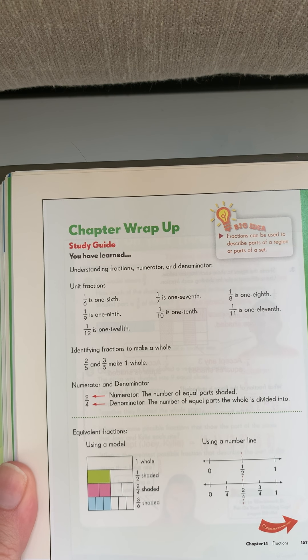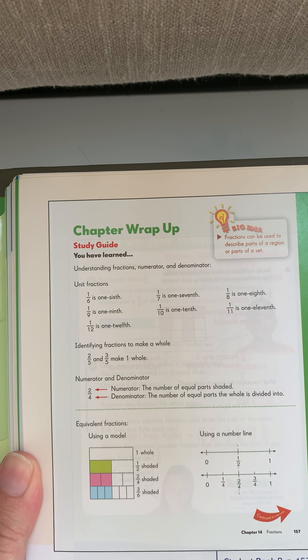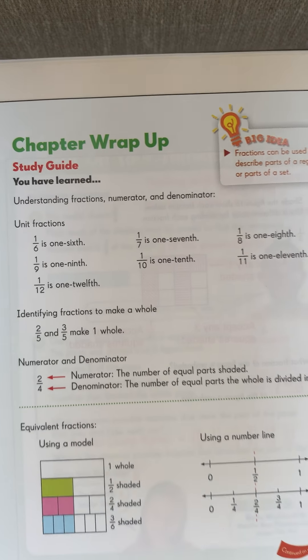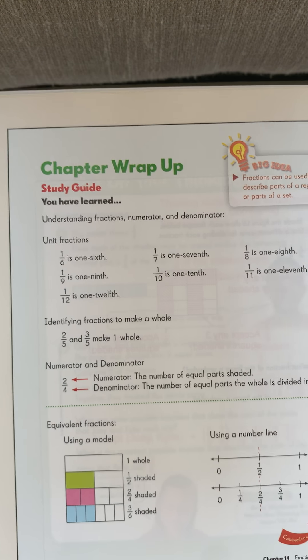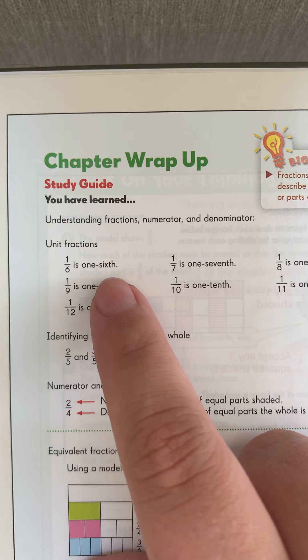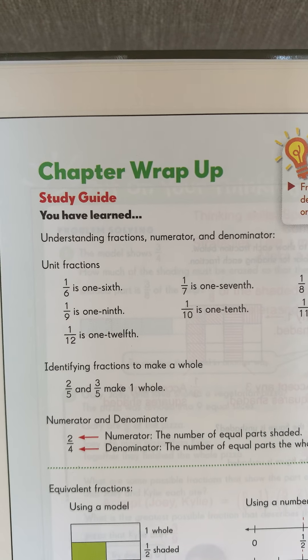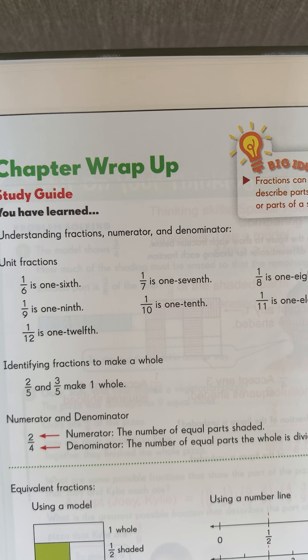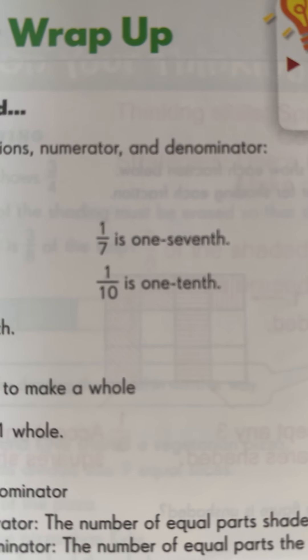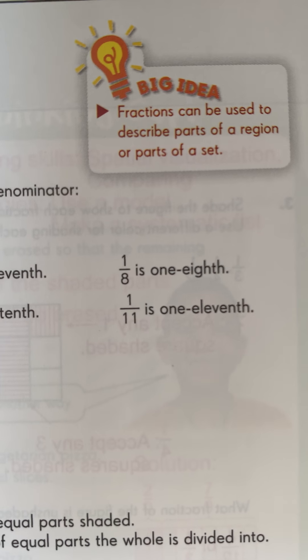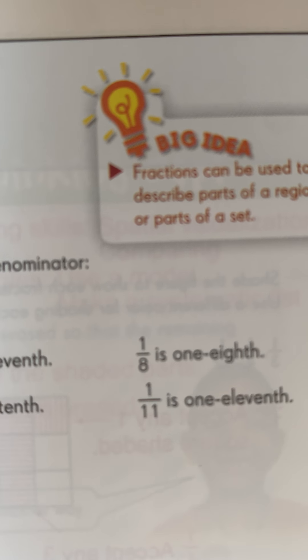So let's go ahead and review today. Go ahead and turn your textbook to page 158. Let's read through chapter wrap-up our study guide. Understanding fractions, numerator and denominator. We have one-sixth, one-ninth, one-twelfth, one-seventh, one-tenth, one-eighth and one-eleventh. Just get used to reading those, how to write different fractions.